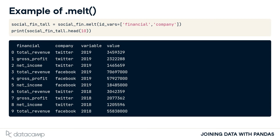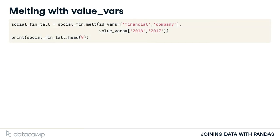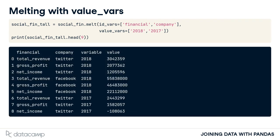In the next example, we will look at how to control what columns are unpivoted. This time, let's use the argument valueVars with the MELT method. This argument will allow us to control which columns are unpivoted. Here, we unpivot only the 2018 and 2017 columns. Our output now only has data for the years 2018 and 2017. Additionally, the order of the valueVars was kept — the output starts with 2018, then moves to 2017.